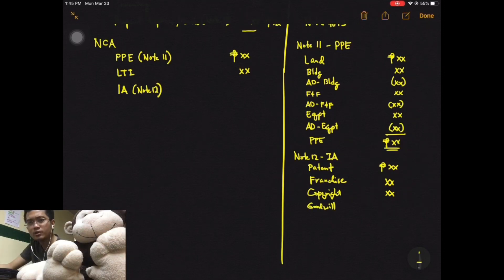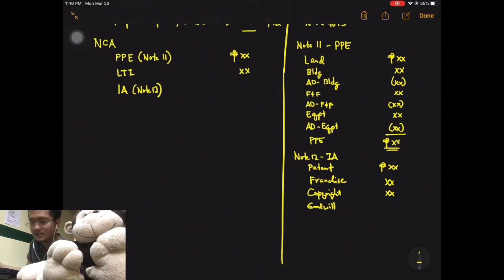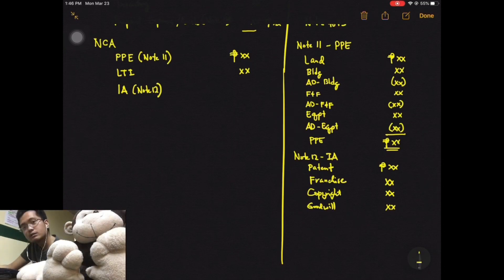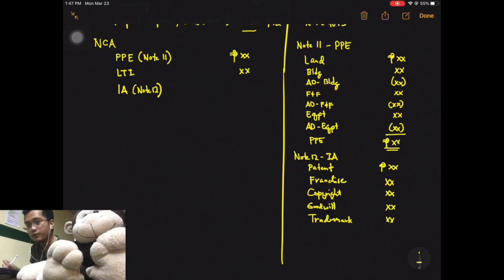Goodwill is the respect you were able to get from the public because of your existence — having loyal customers and the respect you earned from people. Since these are intangible, goodwill falls under intangible assets. Finally, you can include trademark — think of the names, logos, and symbols. Those are just a few examples, so we have five intangible assets listed.